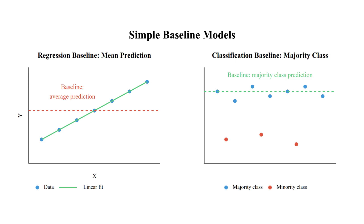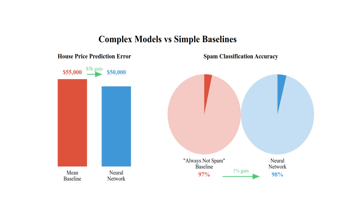Without it, you can't tell if your complex model is actually adding value. When building a house price prediction model, your complex neural network might achieve a $50,000 average error — that sounds impressive, until you realize that simply predicting the mean price of all houses gives you $55,000 error.